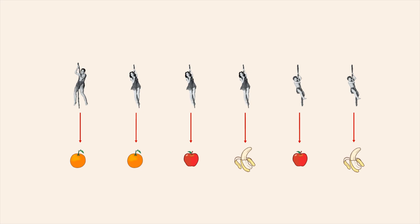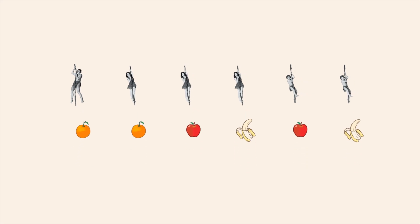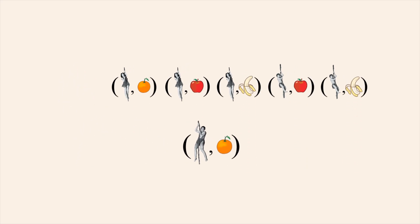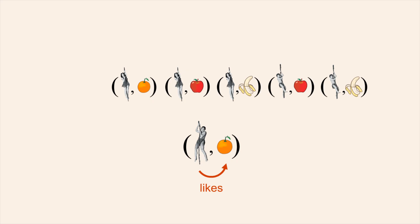Or instead of drawing arrows, we could represent each association between a person and a fruit as an ordered pair. In each ordered pair, the first element is a person from set A and the second element is one fruit from set B which that person likes. We call these pairs ordered since the two elements cannot be swapped without changing the meaning of the relation. For example, Tarzan likes oranges, but oranges don't necessarily like Tarzan.